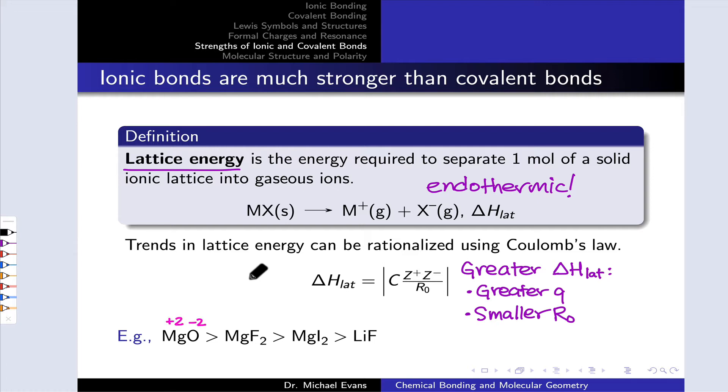In MgO, we've got an Mg²⁺ cation and an O²⁻ anion. In MgF₂, we have the Mg²⁺ cation with an F⁻ anion. MgI₂ likewise has that Mg²⁺ cation and I⁻ anion. And lithium fluoride has a Li⁺ cation and an F⁻ anion.